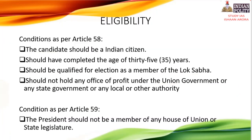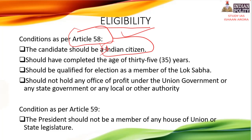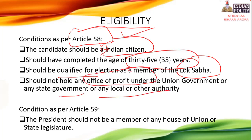Article 58 describes the eligibility to become President. The candidate must be an Indian citizen, at least 35 years of age, qualified to be elected to the Lok Sabha, and must not hold any office of profit under the Government of India, any state, or any local authority. Under Article 59, they should not be a member of any house of Union or state legislature — if they are, they must resign before assuming office.